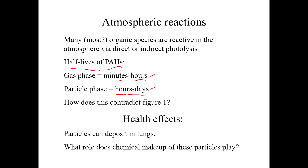Smoke from cigarettes works on a very similar basis — some is caught in the back of your throat but a lot gets inhaled very deeply. That's how nicotine is delivered; nicotine is not a very volatile chemical, so a lot of it gets delivered to your lungs by means of particles. We don't really know much about the chemical makeup of the particles and how that plays into chemical exposure — it's a big field of research.